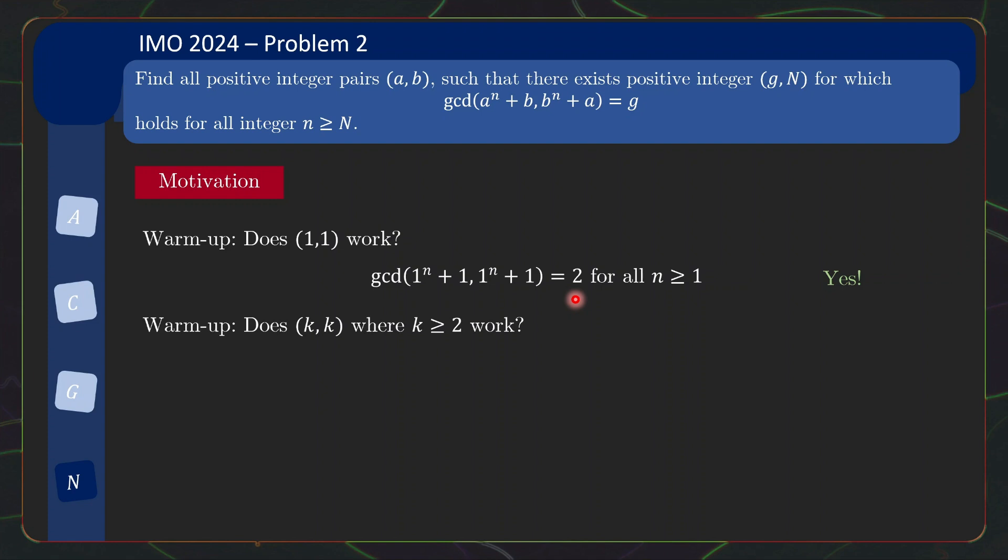Next natural thing to try, does (k, k) work where k ≥ 2? Well in this case the gcd expression is this and as n changes, it will not be eventually constant, it will keep changing. So the answer is no.